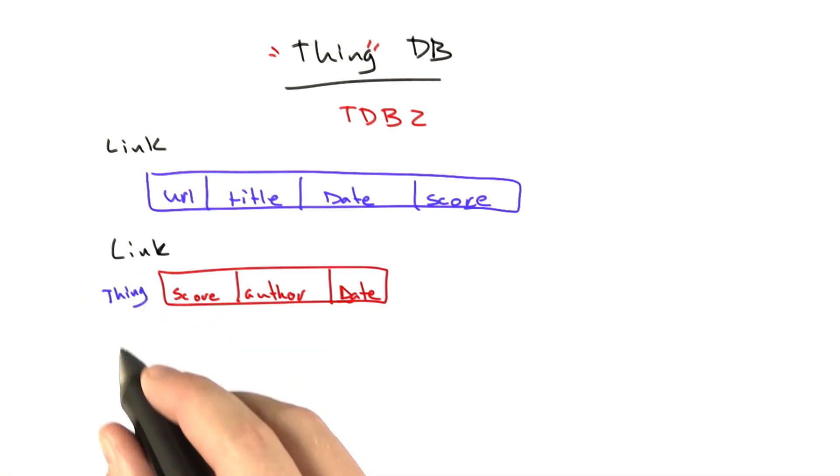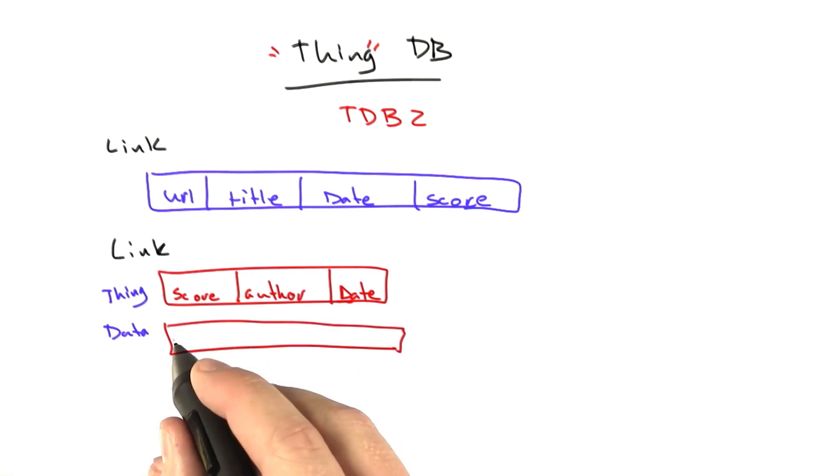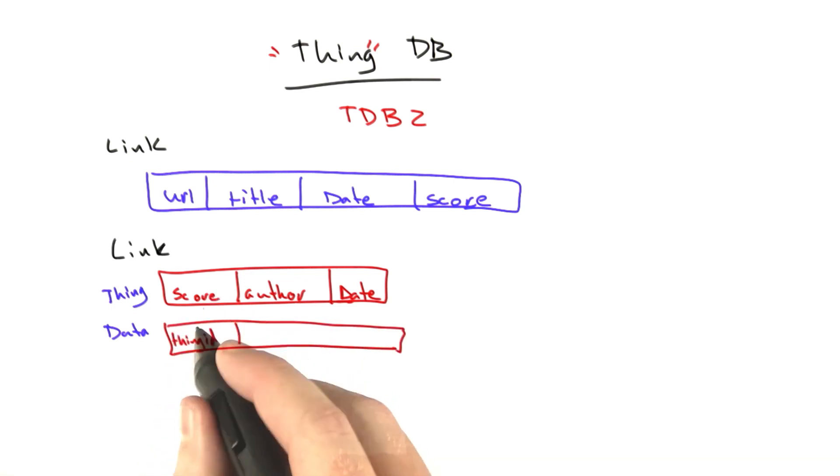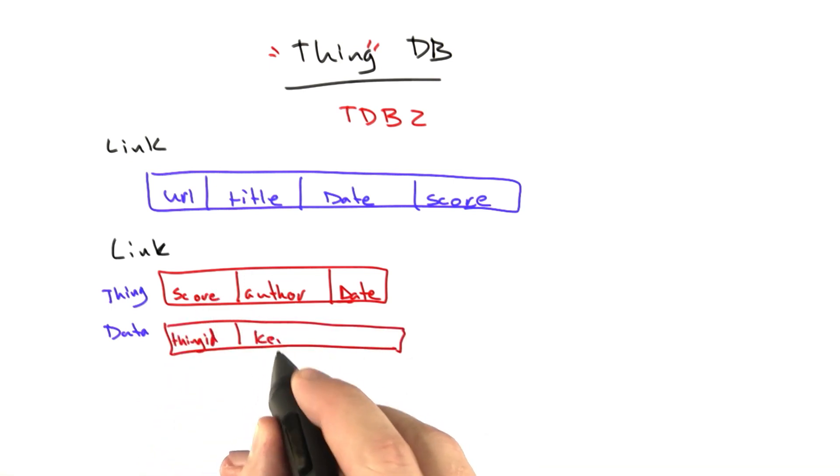This was called the Thing table. And then we had a separate table that every data type had called the data table. And the data table basically had three columns: it had the thing ID, which thing are we referring to, and it had a key and a value.